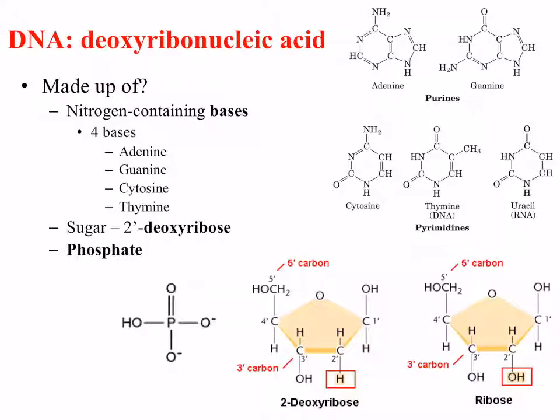Something else to draw attention to is that from these sugars you can see, labelled in red, the 5' carbon and 3' carbon. As mentioned, this is important when it comes to replication and transcription because the directionality of the DNA molecule is important in terms of how it's read by enzymes and how it's synthesised by enzymes.